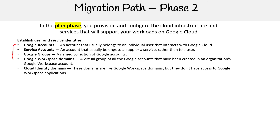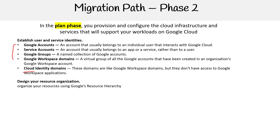Cloud Identity domains are like Google Workspace, but they don't have access to Google Workspace applications. This is when you just need access to Google Cloud but not to G Suite. Design your resource organization by organizing your resources using the Google resource hierarchy.